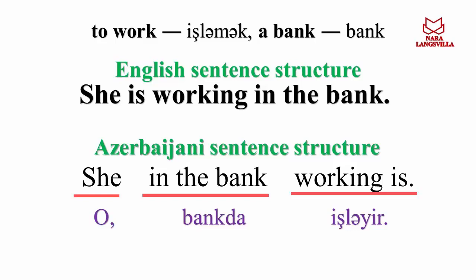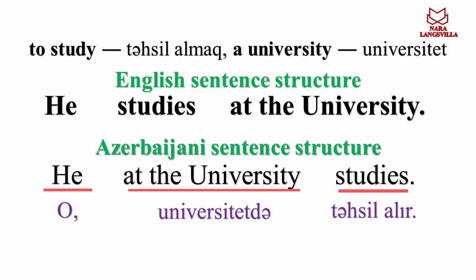To study — təhsil almaq. A university — universitet. English sentence structure: He studies at the university — O universitetdə təhsil alır.